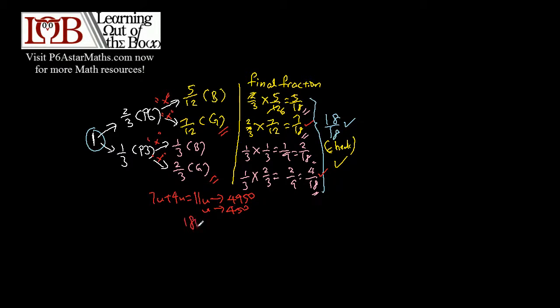And to find 18 units, just take 18 times 450, which is equal to 8,100. And this is your answer for part A.